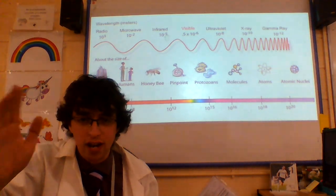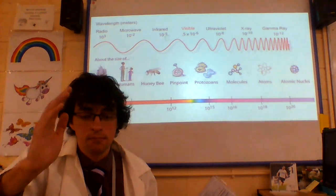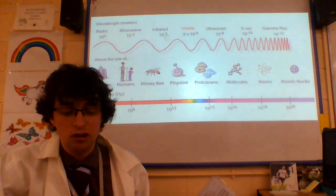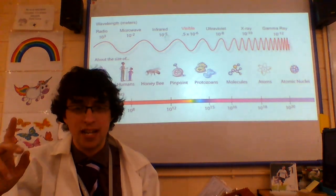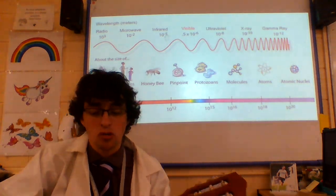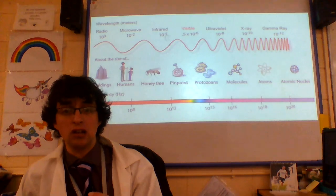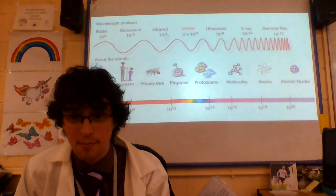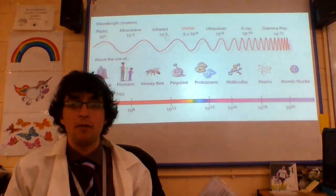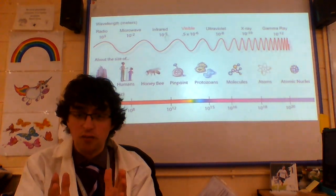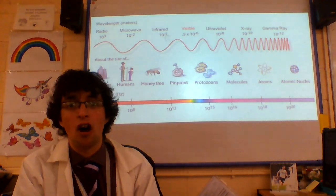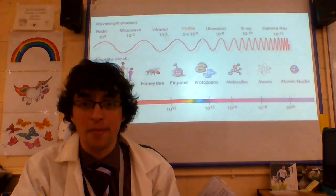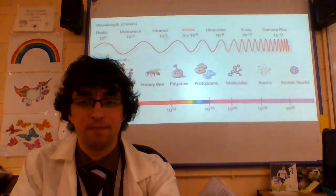So, the order: radio, microwave, infrared, light, UV, x-ray, gamma rays. Radio has the lowest frequency so they're the least damaging. Gamma rays have the highest frequency, so shorter wavelengths, and are the most damaging. The Electromagnetic Spectrum.